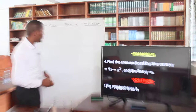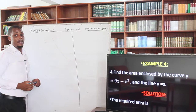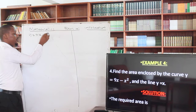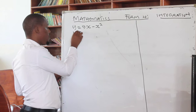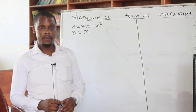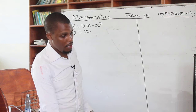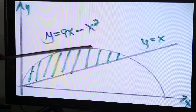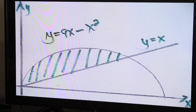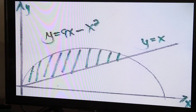So the question the examiner is telling you to do is: find the area enclosed by the curve y = 9x − x² and the line y = x. The required shaded region is bounded by the straight line y = x and the curve y = 9x − x².